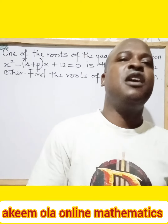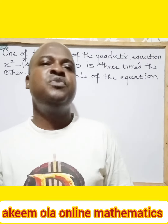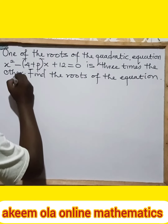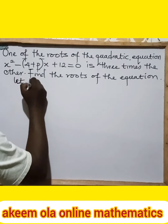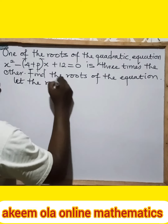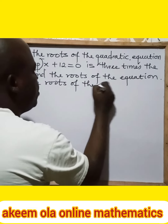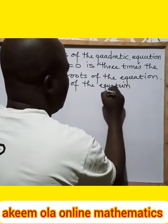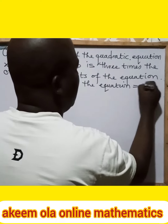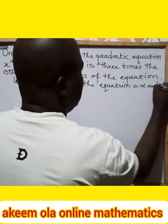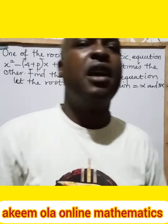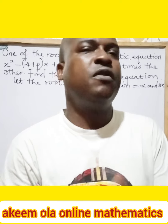You can either use alpha or 3*alpha, or you can use beta or 3*beta. So in this case, let the roots of the quadratic equation be alpha and 3*alpha. From the question now, we can consider the given equation.